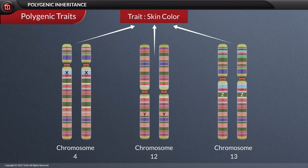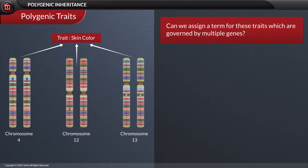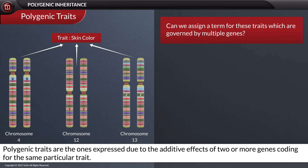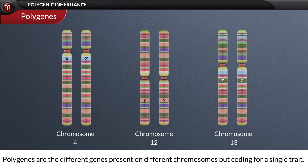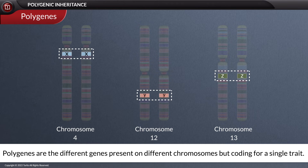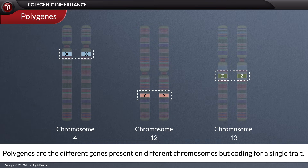The production of grades of phenotypes is due to additive effects of two or more genes coding for the trait. From this concept, can we assign a term for these traits which are governed by multiple genes? Yes. These traits are called polygenic traits. Each polygenic trait is controlled by non-allelic genes that affect the phenotype, and these are called polygenes.